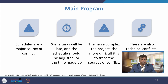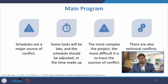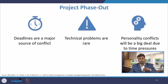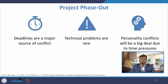The more complex the project, the more difficult it is to trace the source of conflict during the main program stage. There are also technical conflicts during the main stage. During the project phase-out — the last stage — conflicts are mainly due to deadlines, which are a major source of conflict. Technical problems are rare because the project is almost complete, but personality conflicts will be a big deal due to time pressure.